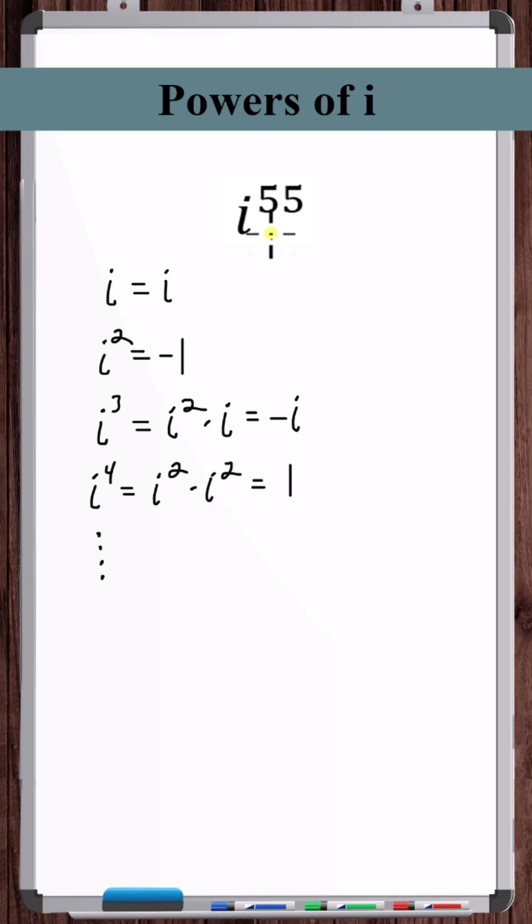All we need to do is take 55 and divide it by 4, and we get a remainder of 3. Therefore, we can write i to the power of 55 as i to the power of 52 times i cubed. Since 52 is divisible by 4, this equals 1.